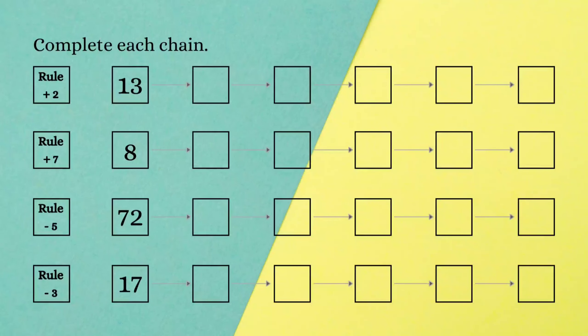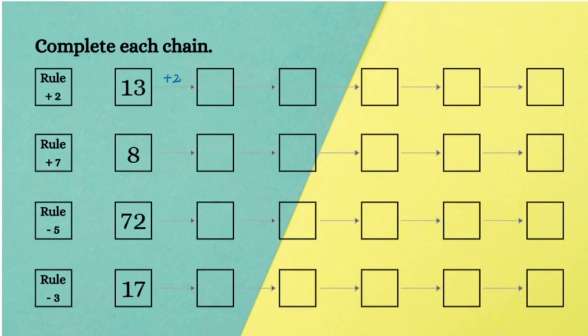Let's practice again. In the first question the rule is adding 2: 13 plus 2 gives us 15, 15 plus 2 gives us 17, and so on. The second question, the rule is adding 7: 8 plus 7 gives us 15, 15 plus 7 gives us 22, and so on.